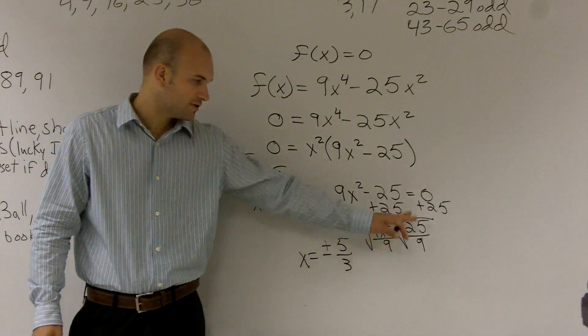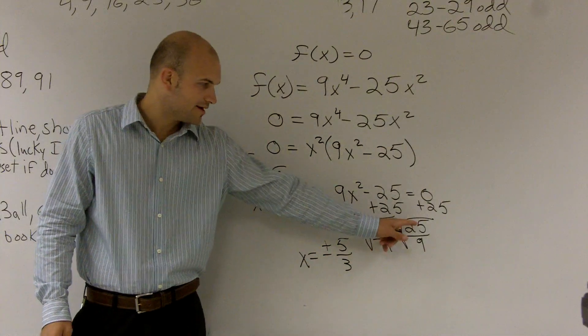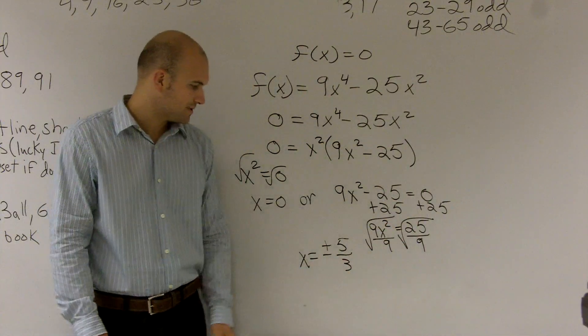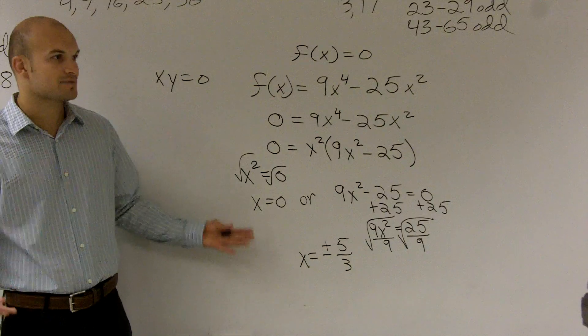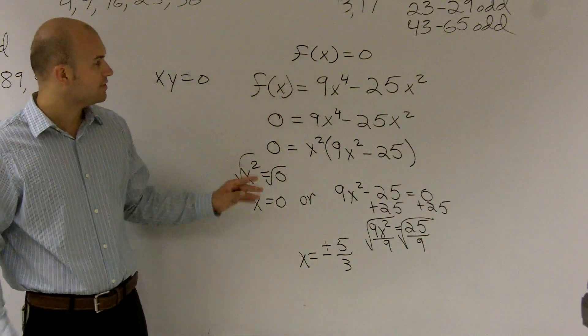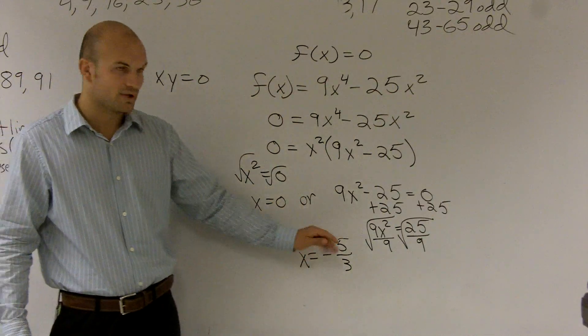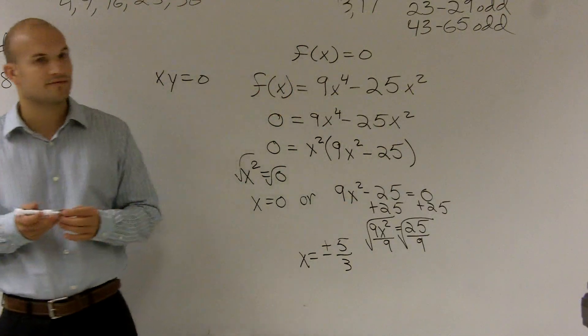So just make sure when you take the square root you have the plus or minus. But then you're going to have the square root of 25 is 5, square root of 9 is going to be 3. So therefore your values, your possible values for your zeros, we're going to look at is going to be zero or plus or minus 5 thirds. And that's how you find the zeros of the function.